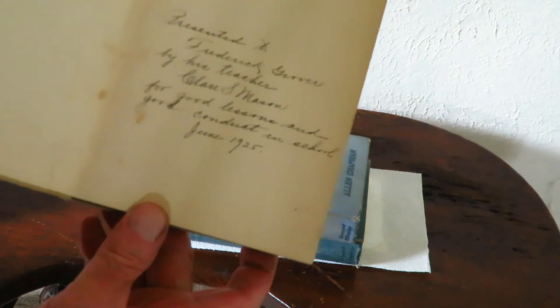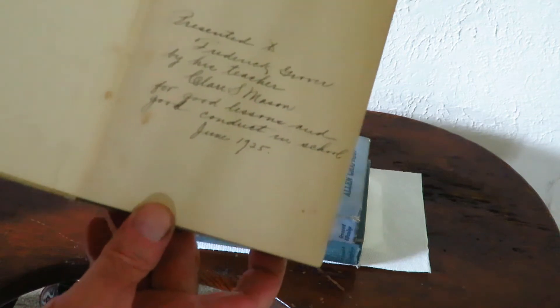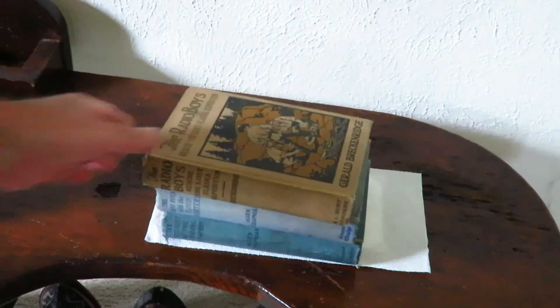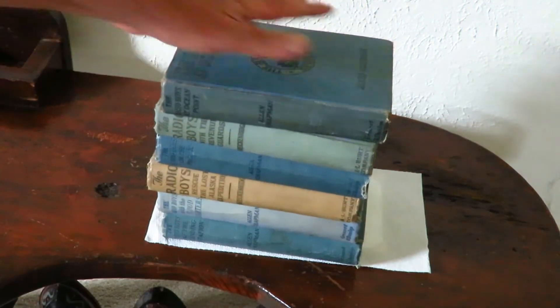I don't care so much for the Gerald Breckenridge versions, but this one's cool because it says 'Presented to Frederick Grover by his teacher Claire S. Mason for good lessons and good conduct in school, June 1925.' That should do it.